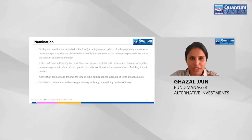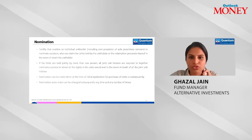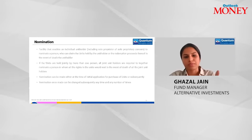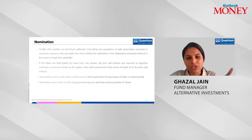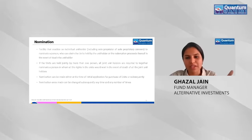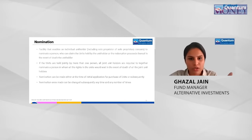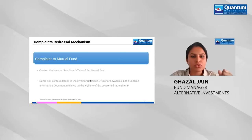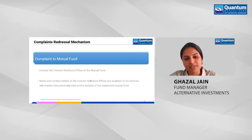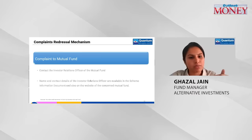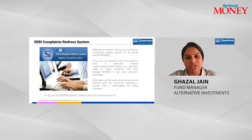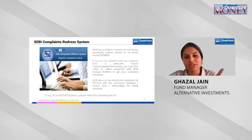Another important aspect is nomination. Nomination is a facility that enables a mutual fund investor to nominate a person who can claim the units held by them in the event of their death. Without a nomination, the transfer of those units becomes very tricky. With a clear nominee, it's a much smoother process. If you have complaints, contact the investor relations office of the mutual fund — details are on the fund's website. If unsatisfied with the response, SEBI has a centralized web-based complaints redressal system called SCORES where you can get your complaint redressed.